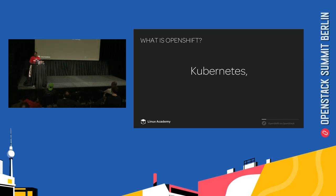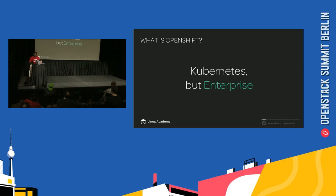What is OpenShift? OpenShift is Enterprise Kubernetes by Red Hat — it's Kubernetes, but Enterprise. It's a platform-as-a-service offering from Red Hat that brings together Docker and Kubernetes and provides an API to manage all of these services together.